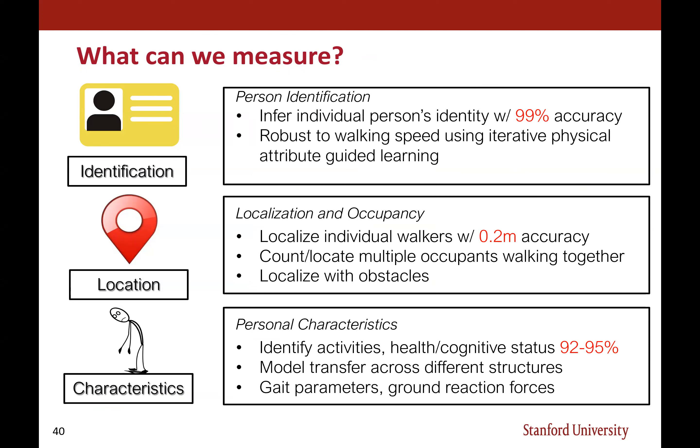In summary, we're able to identify a person with up to 99% accuracy and localize occupants with up to 0.2-meter accuracy. Even when there are multiple people walking together, we can count and locate individual persons separately with similar accuracy. More recently, we've been characterizing people's activities and health conditions, achieving up to 92-95% accuracy for differentiating everyday activities like cooking, vacuuming, and cleaning, and estimating health status by correlating gait patterns to different disease states.